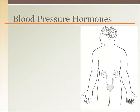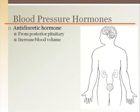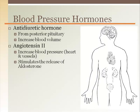There are a few hormones that have direct effects on either blood pressure or blood volume. Antidiuretic hormone comes from the posterior pituitary gland, targeting the kidney and increasing the permeability of the distal convoluted tubule to water, thereby increasing blood volume.